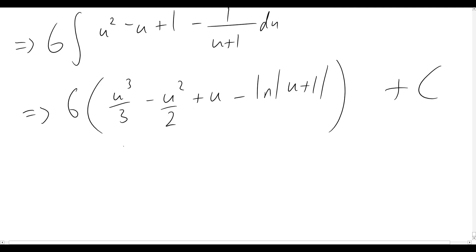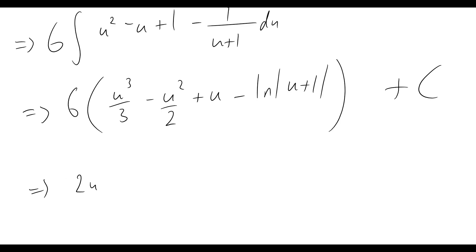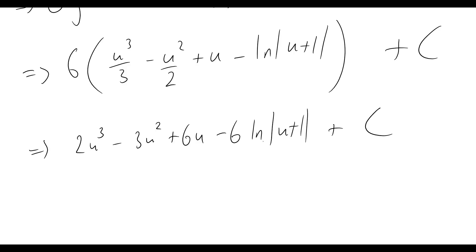So now two more steps real quick. Quickly we'll bring that factor of six inside and expand that out so then we'll end up with two u cubed minus three u squared plus six u minus six times the natural log of u plus one plus c. So now our last step is to remember that we had initially written that x is equal to u to the power of six. So what that means now is I can rewrite this where u is equal to the sixth root of x.